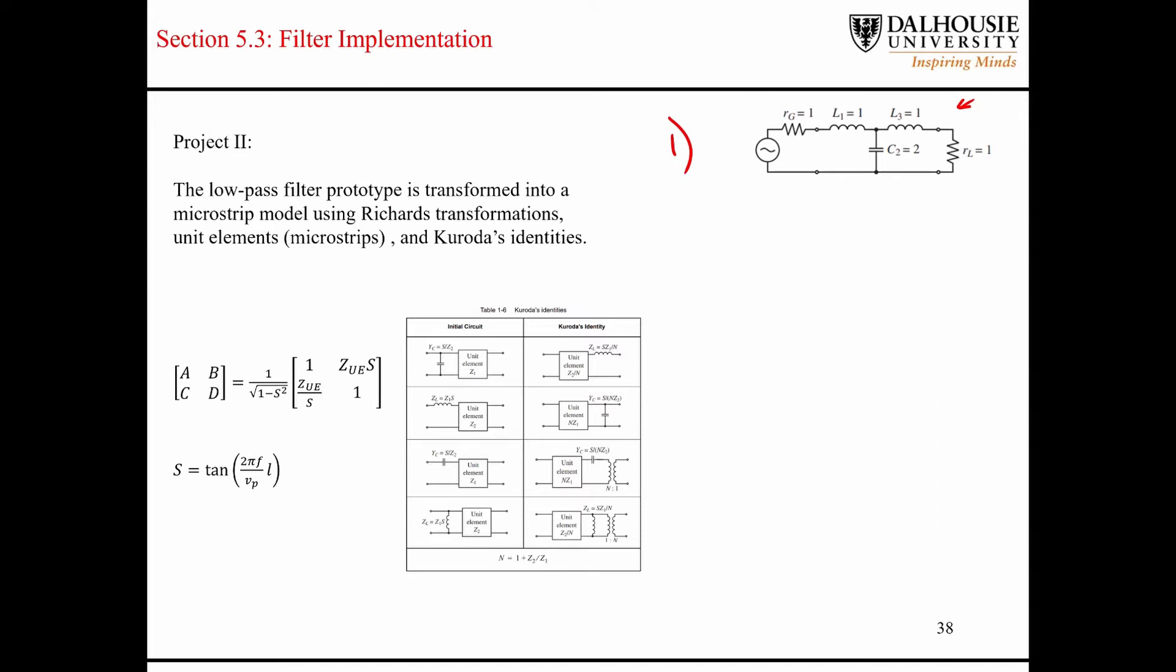The impedance transformations that we're going to use is called the Richard transformation. And we're going to insert something called unit elements. Really what that means is just a two-port network that's describing a microstrip. The microstrip is defined by ABCD parameters.